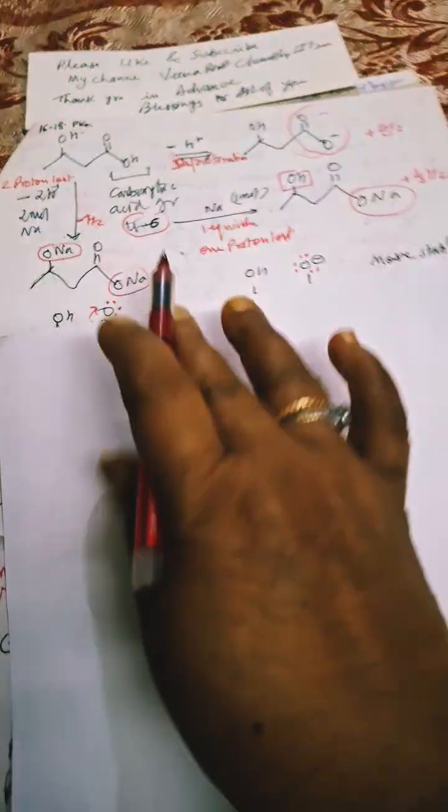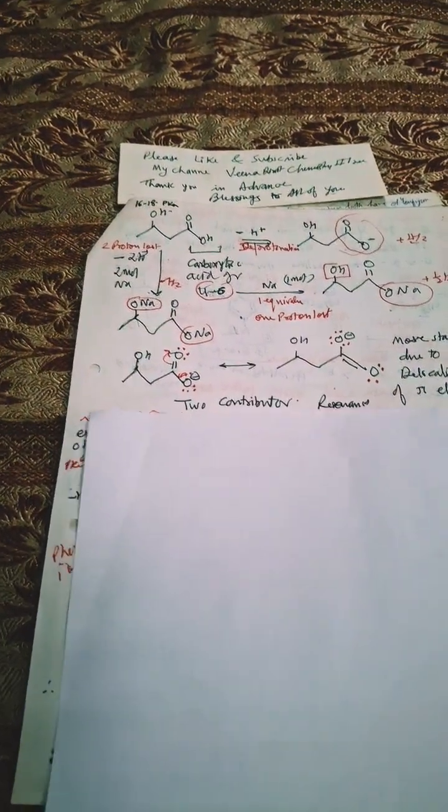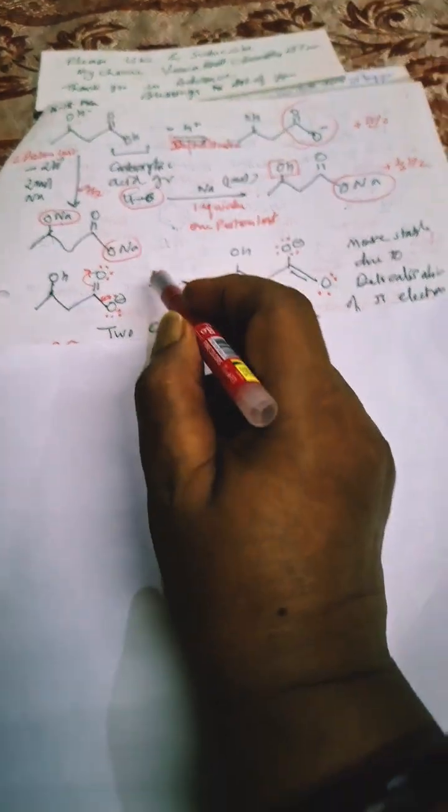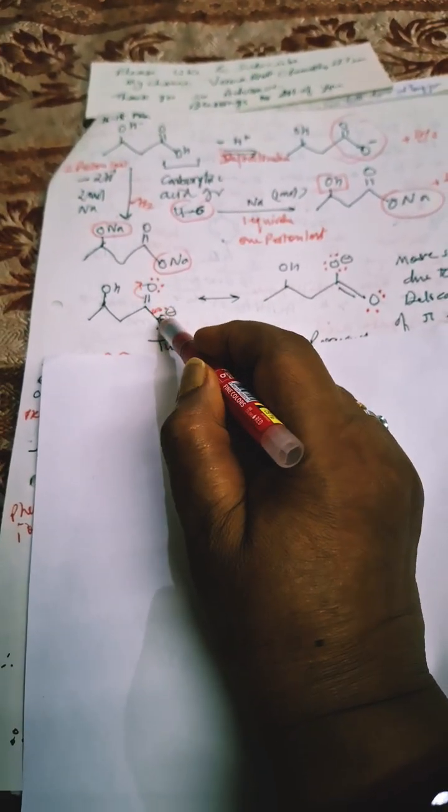This carboxylate ion, here I have shown you that it is resonance stabilized. That is why it loses H+ very readily. See, this is carboxylate ion. It is having double bond and single bond.